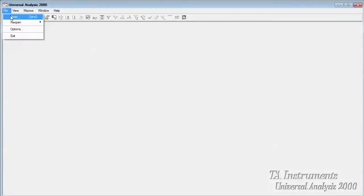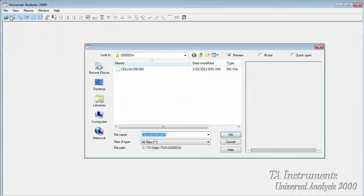To begin, let's open the data file in UA by selecting File Open, browse into the location of your data file, and then select OK.